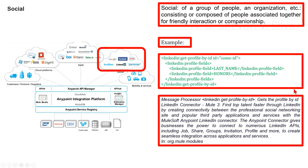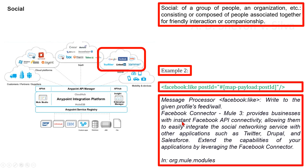As a second example, we can consider this message processor: facebook:like — it writes to the given profile's fields, feed, or wall.